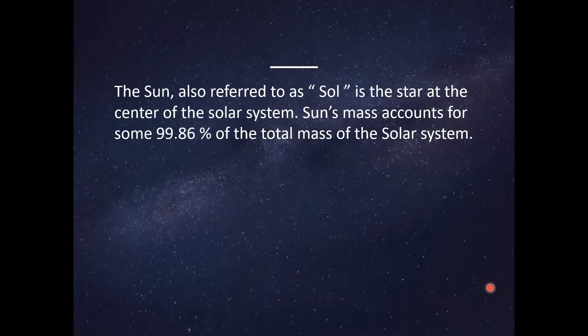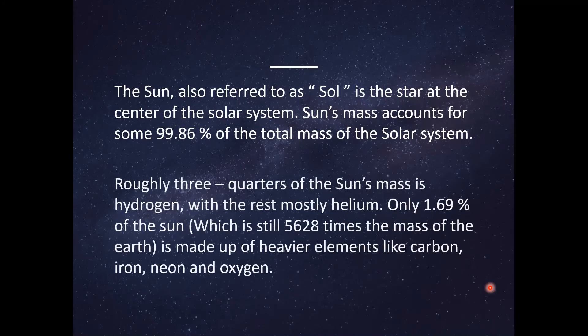The Sun, also referred to as Sol, is the star at the center of the Solar System. The Sun's mass accounts for some 99.86% of the total mass of the Solar System. Roughly three quarters of the Sun's mass is hydrogen, with the rest mostly helium. Only 1.69% of the Sun — still 5,628 times the mass of the Earth — is made up of heavy elements like carbon, iron, neon, and oxygen.